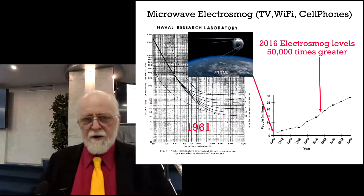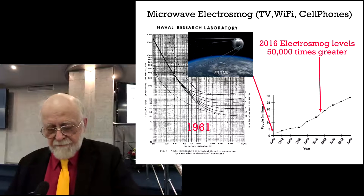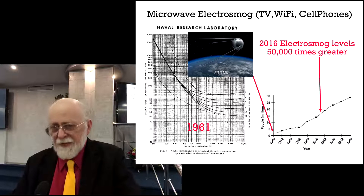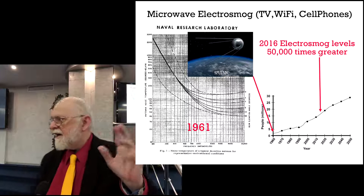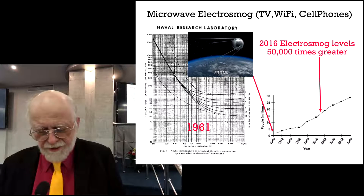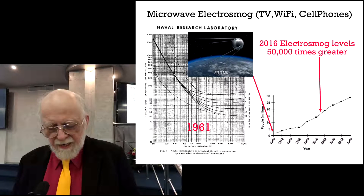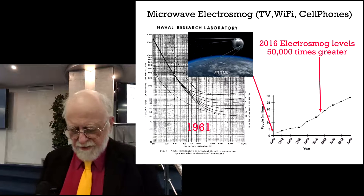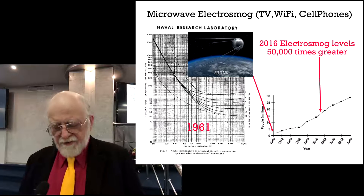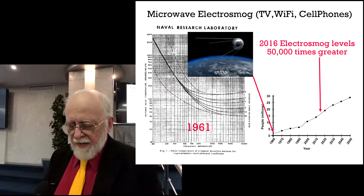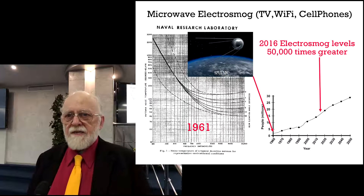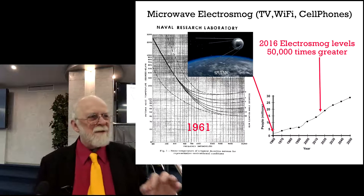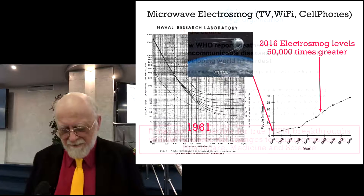How much electrosmog has there been since the start of our graph in 1960? In 1960, Sputnik had just gone up — Sputnik 1 was 1957 — so it was very early days in radiofrequency research. The Naval Research Laboratory conveniently produced a thorough graph of electrosmog across various parts of the Earth's surface. When I compare that graph from 1961 with what we have today, we have 50,000 times greater electrosmog today than in 1960. That's a factor we should be researching if we want to be predictive and preventative in our medicine.